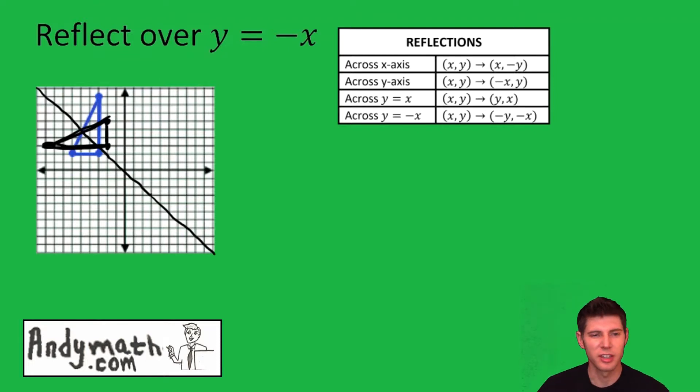Now that we connect the dots, you can see that it looks like it was reflected over the y equals negative x line. Just count the diagonals. Sometimes there'll be half steps. It's not too terrible.